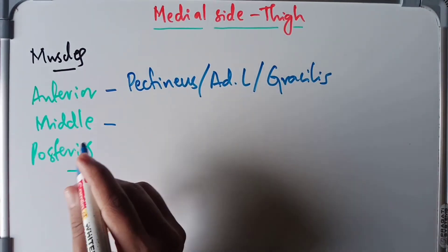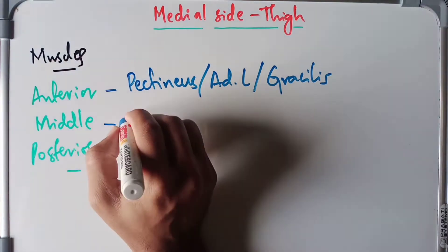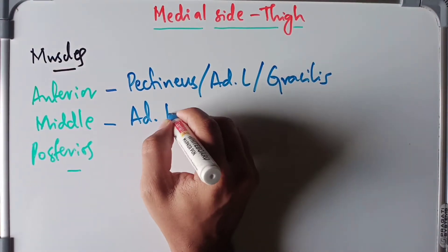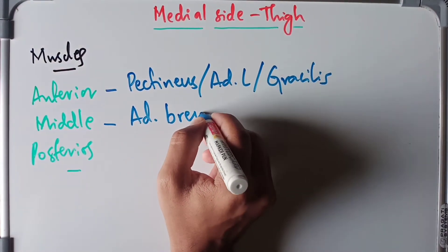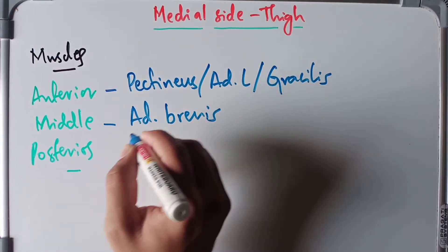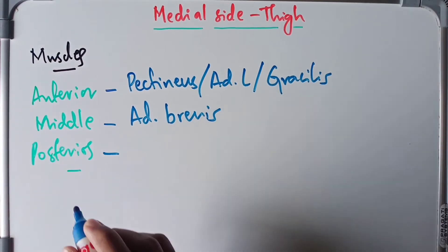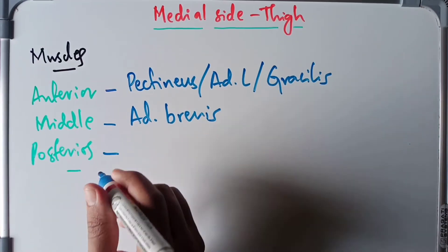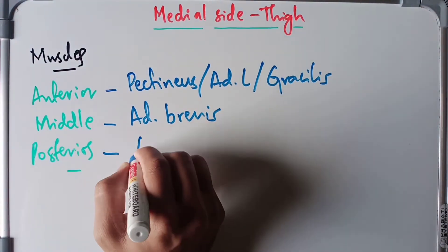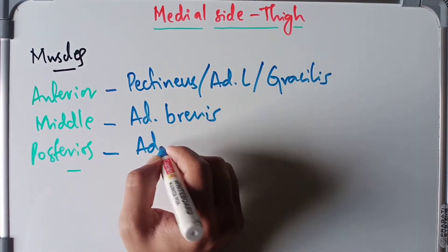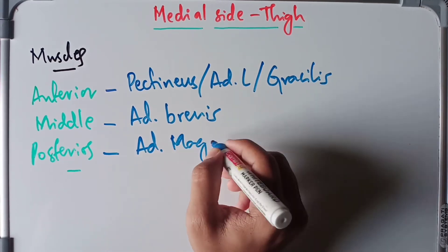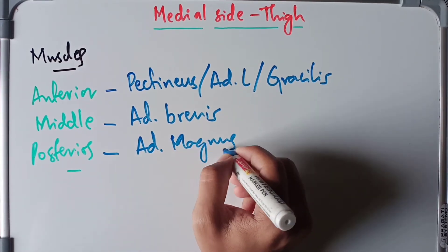The middle layer consists of adductor brevis only, and the posterior layer consists of adductor magnus.